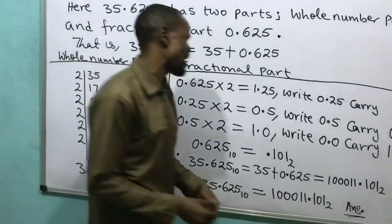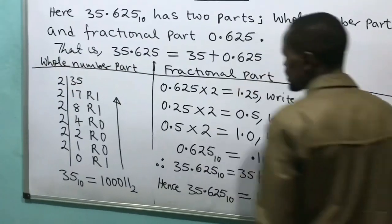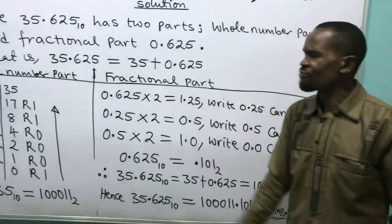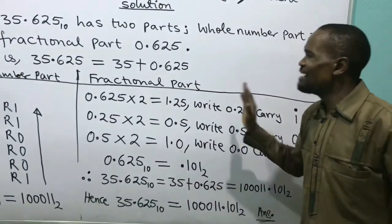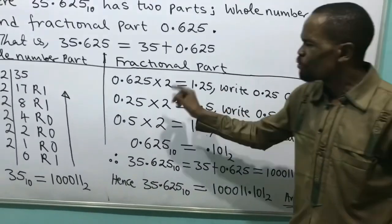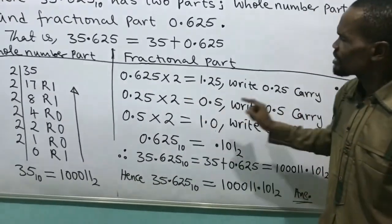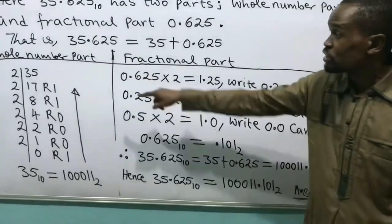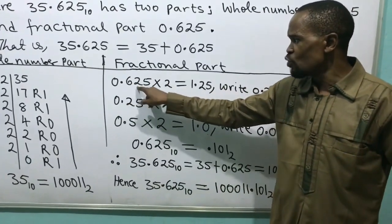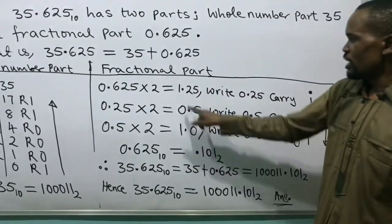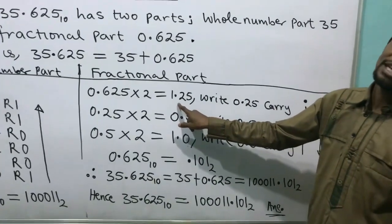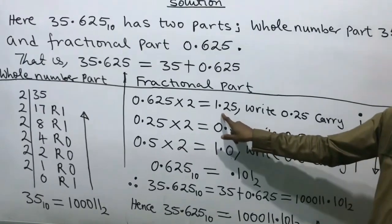Now I go to the fractional part. Coming to the fractional part, I have 0.625. In a fractional part, I have to multiply by 2 — not divide. What I'm going to do in a fractional part is multiply by 2. So: 0.625 multiplied by 2.